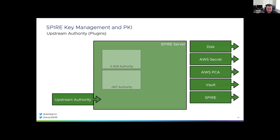There's a whole bunch of upstream CA implementations available. One worth mentioning is the SPIRE upstream authority plugin, where SPIRE acts as the upstream authority for a downstream SPIRE server. Evan will dive into the details of this later, but it enables some interesting resiliency and isolation benefits.